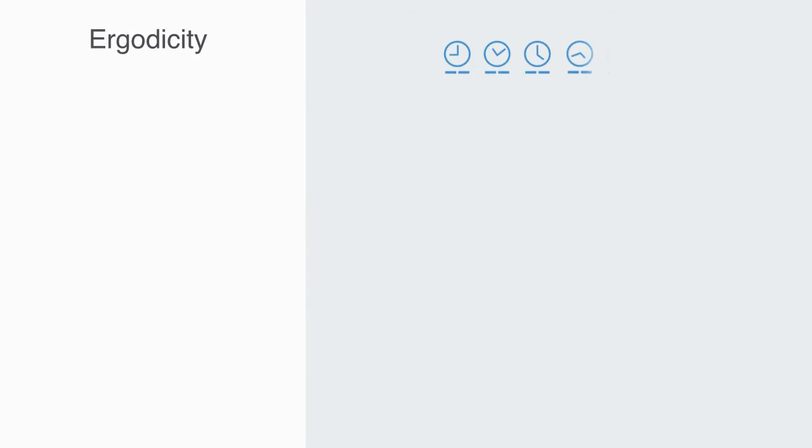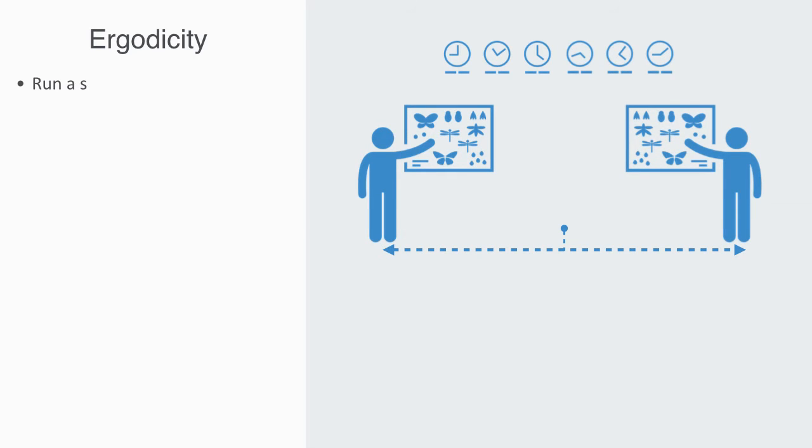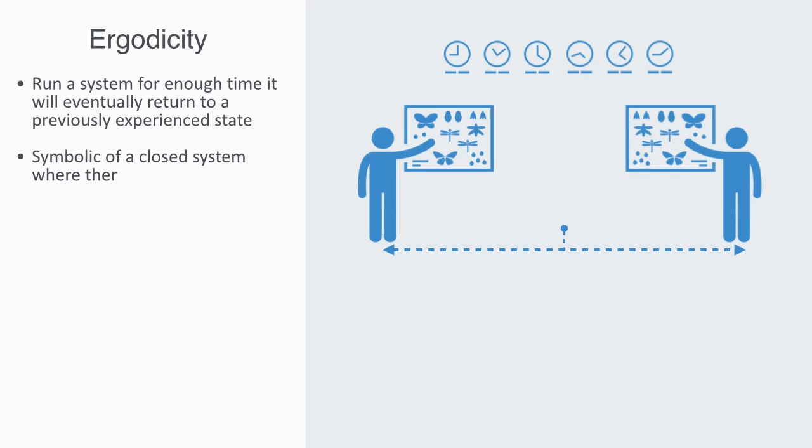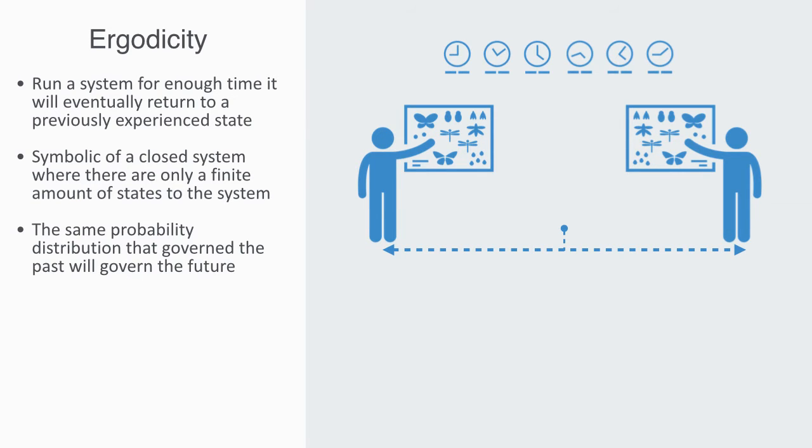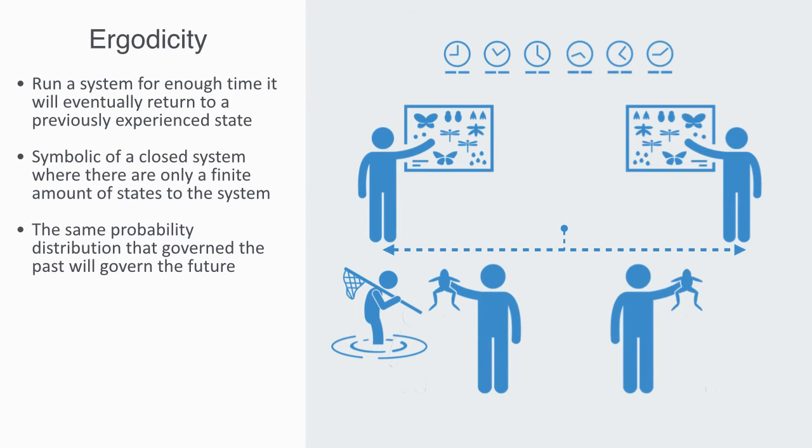Ergodicity is a term that originates within mathematics and physics. It has a quite subtle technical formalization, but in non-technical terms, it basically means that if we take some system and run it for enough time, it will eventually return to a previously experienced state. It is symbolic of a closed system where there are only a finite amount of states to the system. Thus, given enough samples of its past state, we will be able to model its future state.